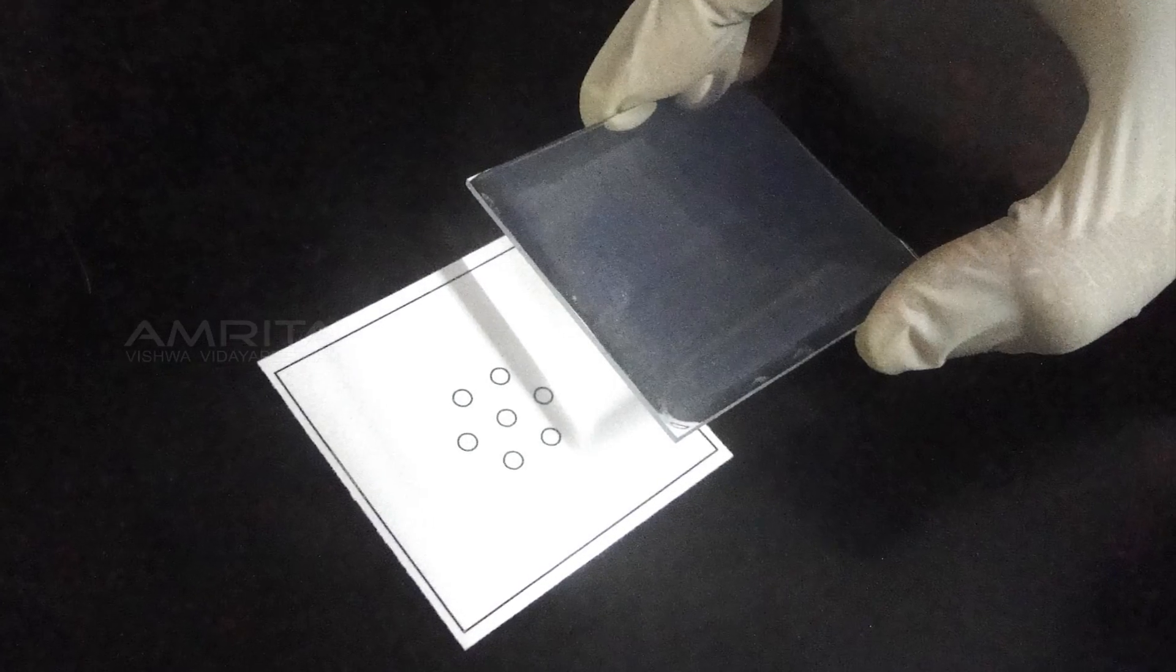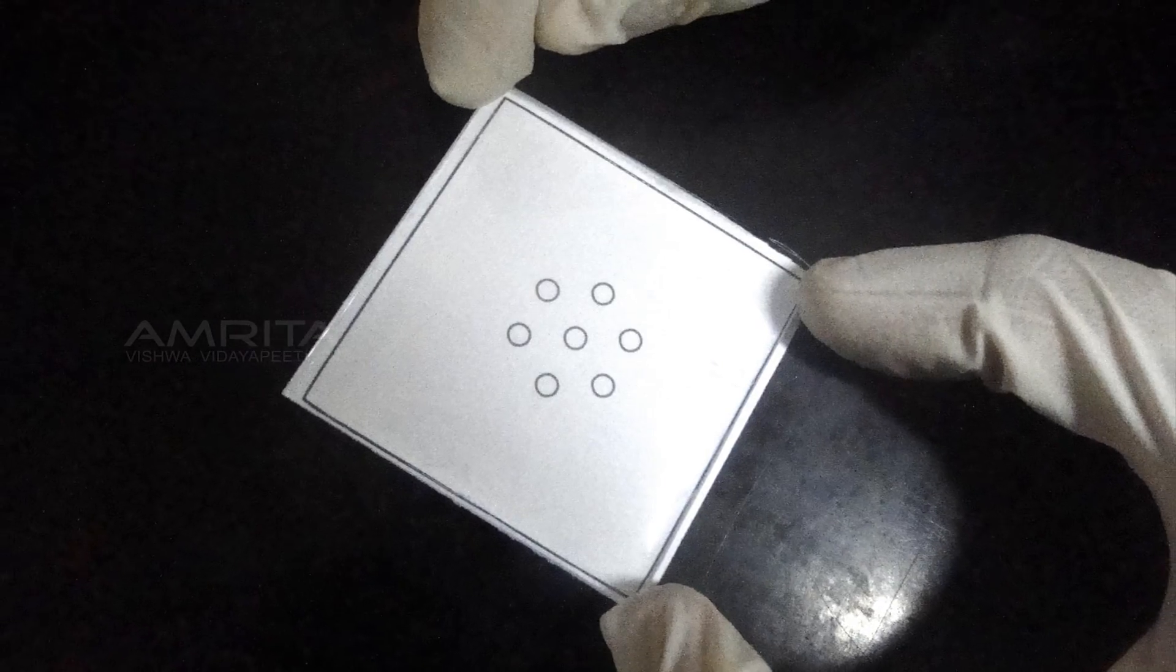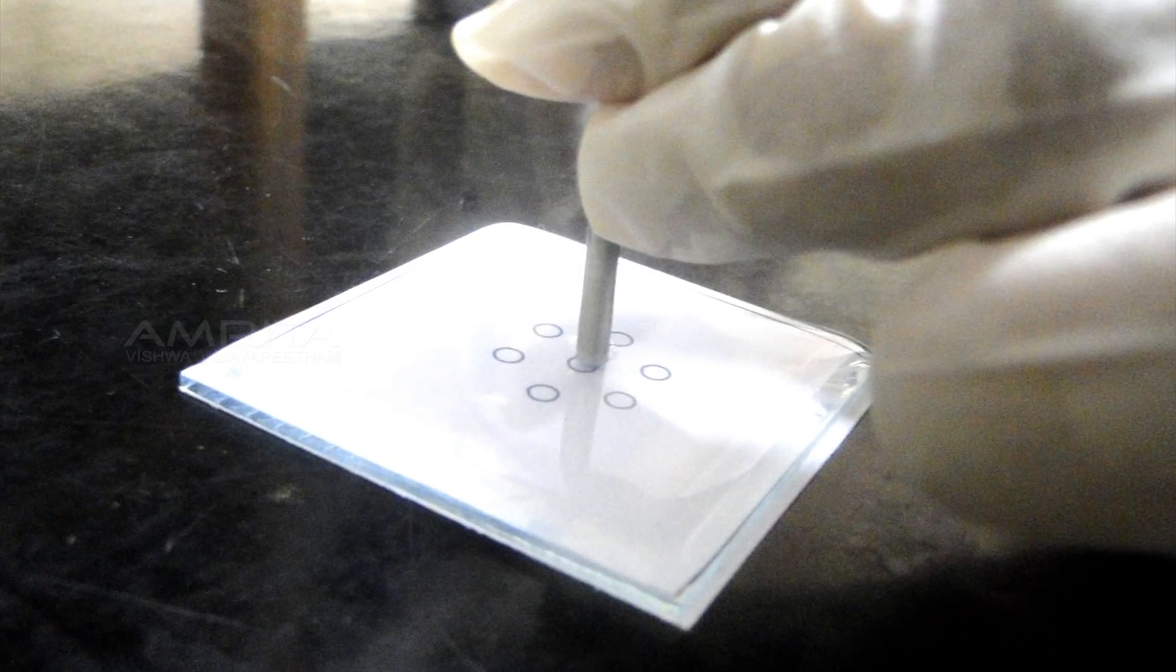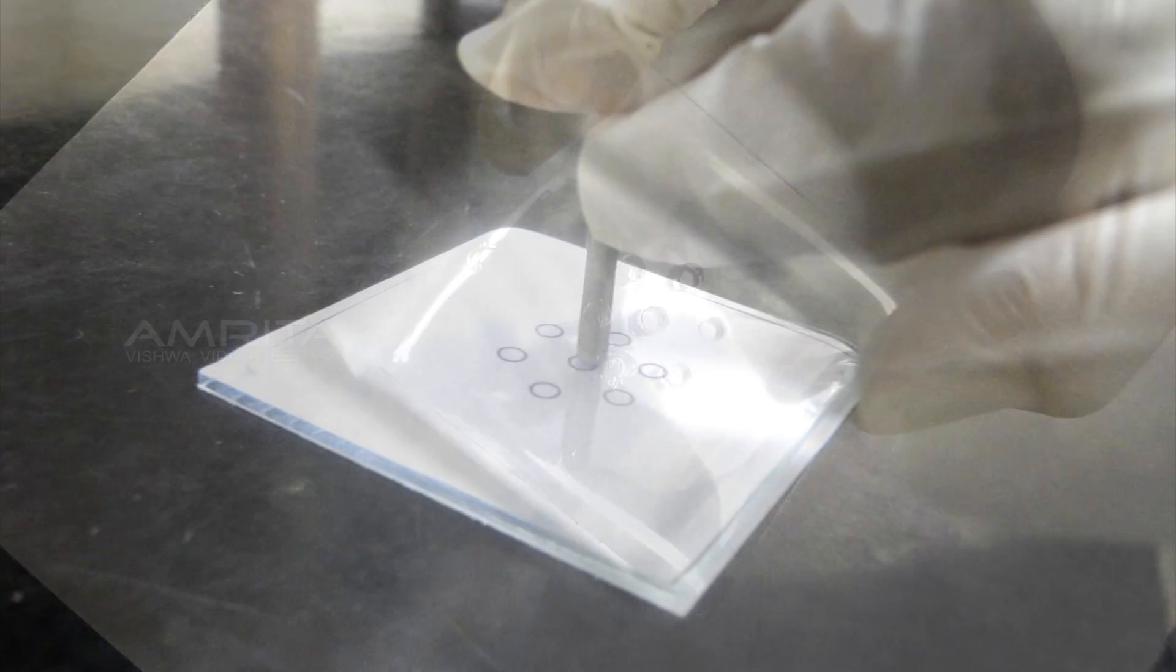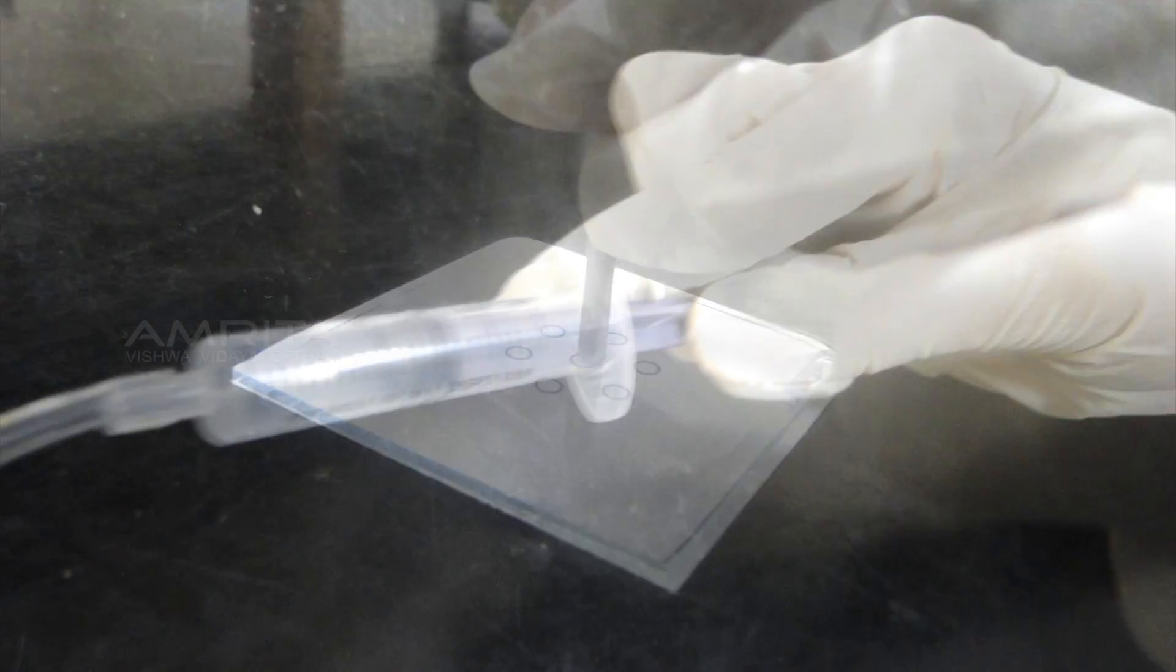Place the gel plate on the template provided. Punch wells in the gel with the help of a gel punch corresponding to the markings on the template. Use gentle suction to avoid forming defect wells.